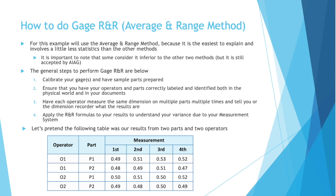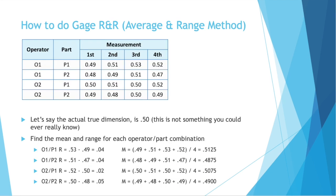So let's actually do an example together. Let's pretend the following table was our results from two parts and two operators. So we have operator 1, O1, and operator 2, O2. Part 1, P1, and part 2, P2. And each part had its measurement taken four times. Let's say the actual true dimension is 0.50. This is not something you could ever really know because you only know through measurements. But for this example, just so you get a good idea of what this is capturing, we'll say the true dimension is 0.5.